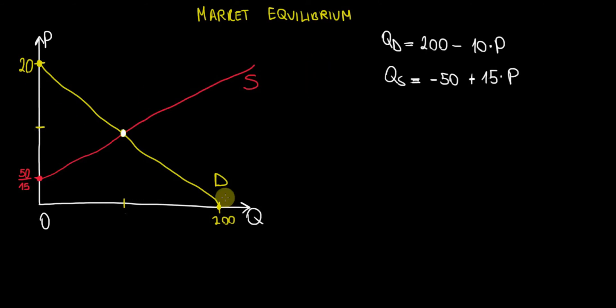That means on a graph we are looking for the intersection point between the demand and the supply curves. Meaning that the buyers and the sellers agree on a given price and agree on how much quantity they can transact.